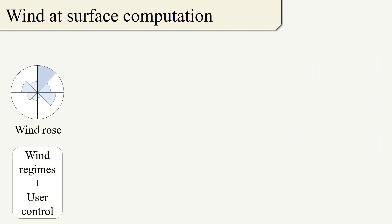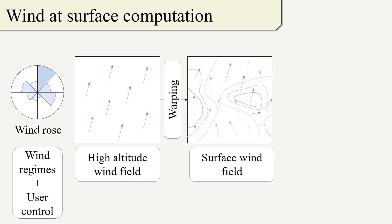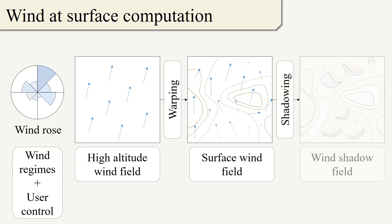Users can specify an overall wind regime as well as directly manipulate wind direction at any time. This high-altitude wind field is warped taking into account the terrain relief in order to compute the wind field at the surface. We also take into account wind shadowing effects, which are fundamental for the formation of dunes.